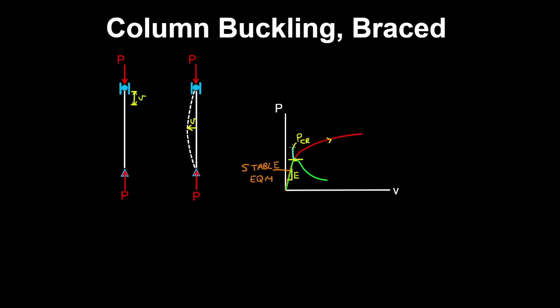This point here, where the critical load is reached and the stiffness of the column degrades to zero, is known as the bifurcation point, which is the point that separates stable equilibrium from unstable equilibrium.